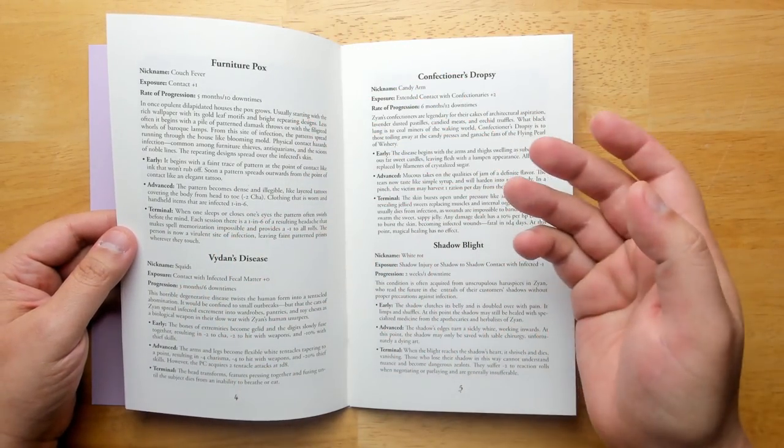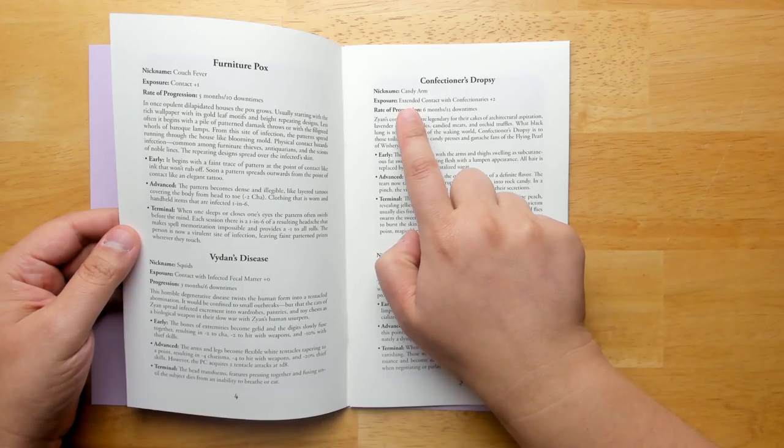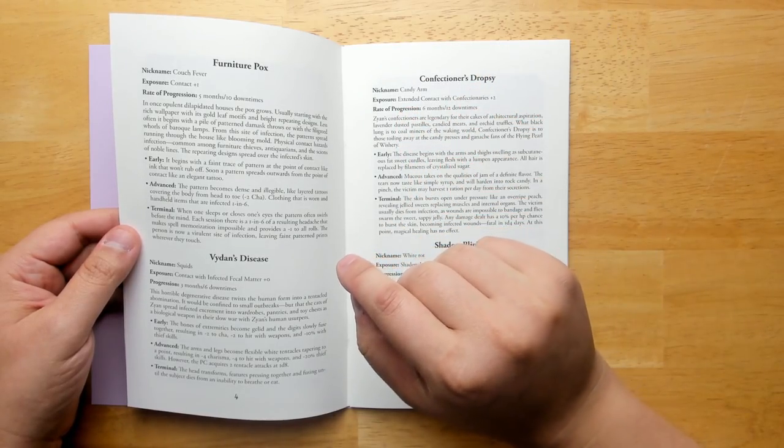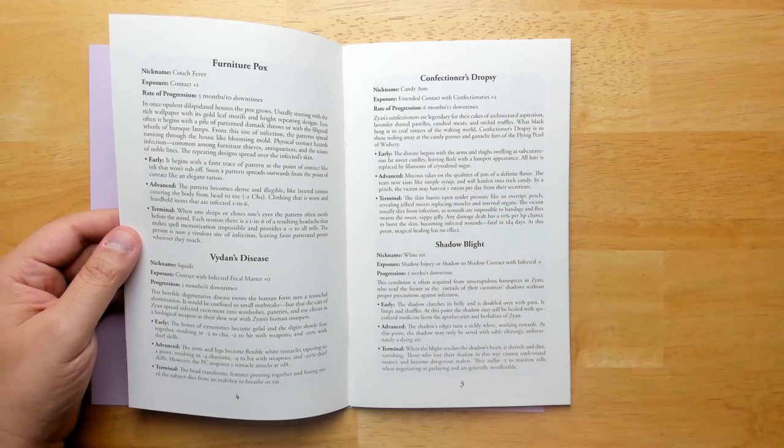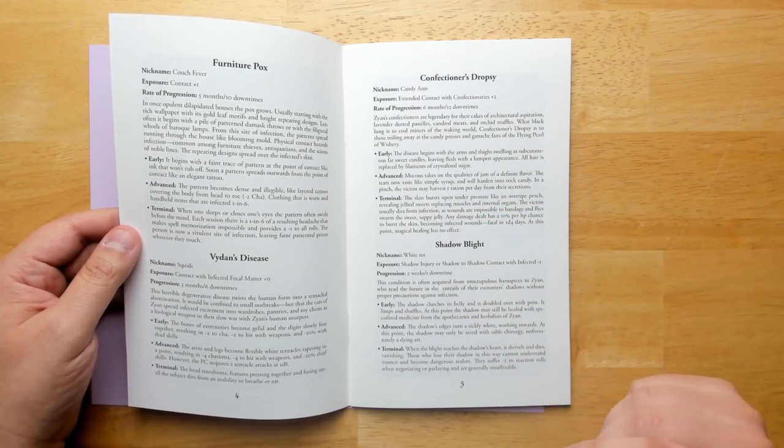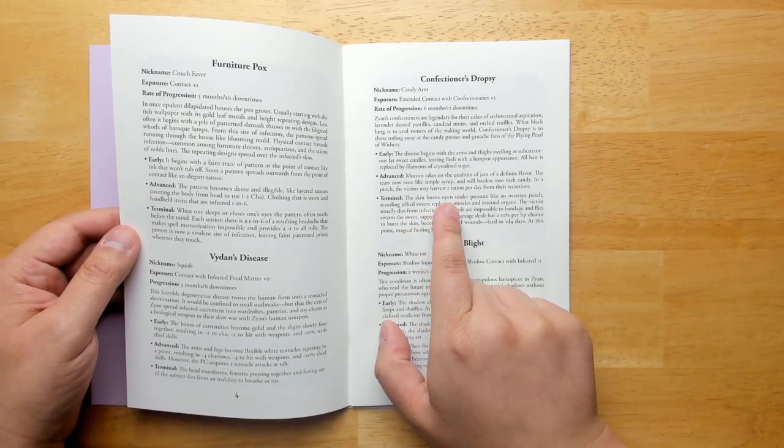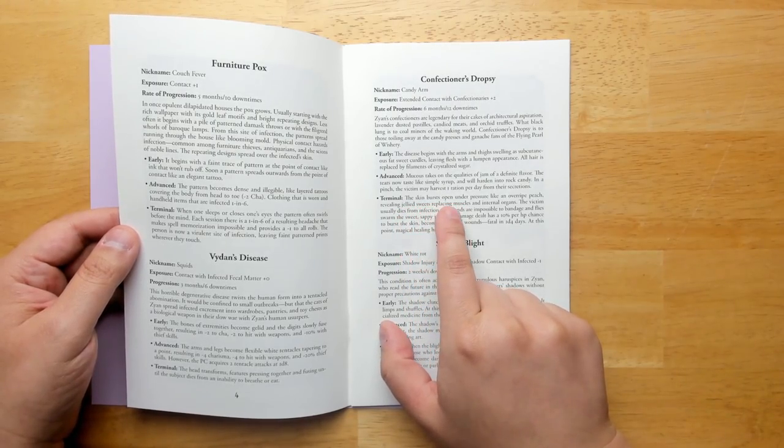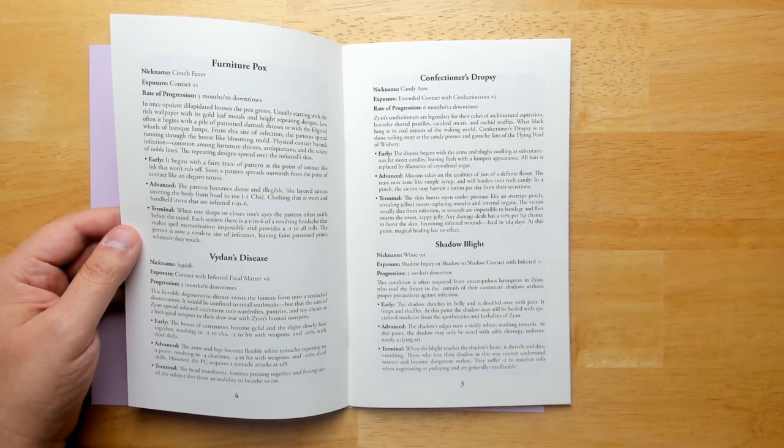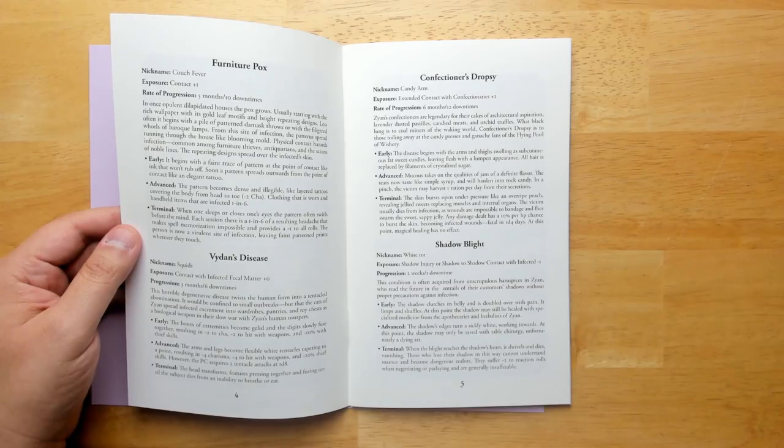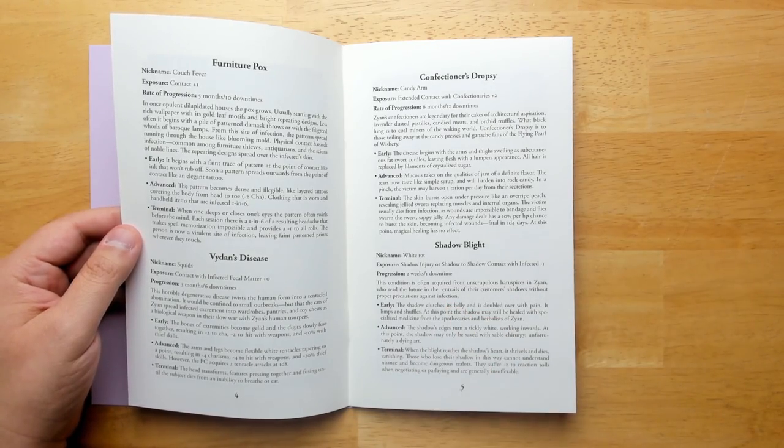Maladies and afflictions in Zion. So we have things like the Furniture Pox or the Confectioner's Dropsy. They all have ways that you can get exposed to it. Like this, you contract it if you have extended contact with confectionaries. And there's a number of processes or stages that it goes through until it becomes terminal, something really horrible. Like this one slowly makes you more candy-like. And when it's terminal, the skin bursts open upon pressure like an overripe peach, revealing jellied sweets replacing muscles and internal organs.